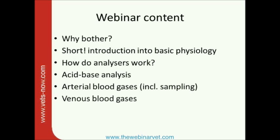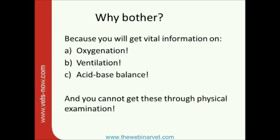Some people put these together. What is actually blood gas analysis? Technically, blood gases are arterial blood gases — we measure for oxygenation — but a lot of machines now give you acid-base analysis as well, and you can actually use venous samples for blood gas analysis, which I'll explain later.